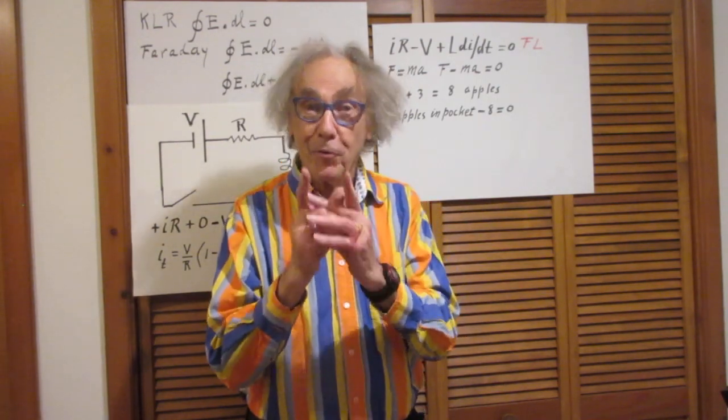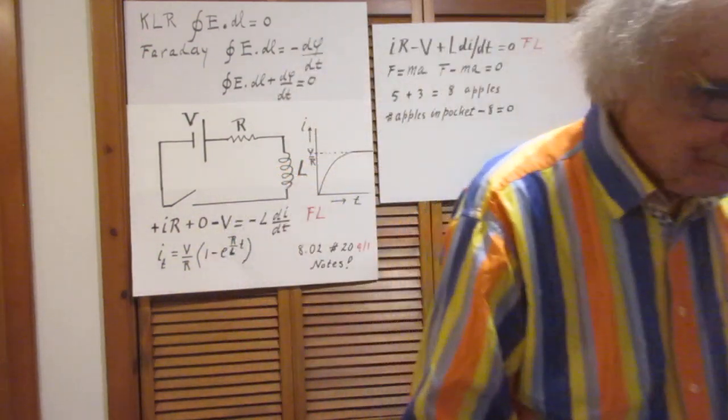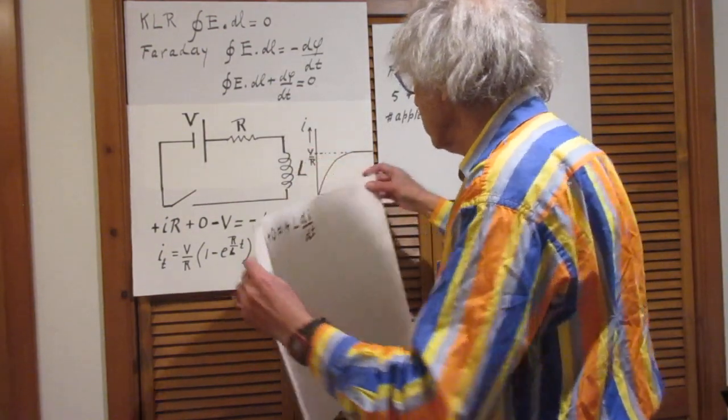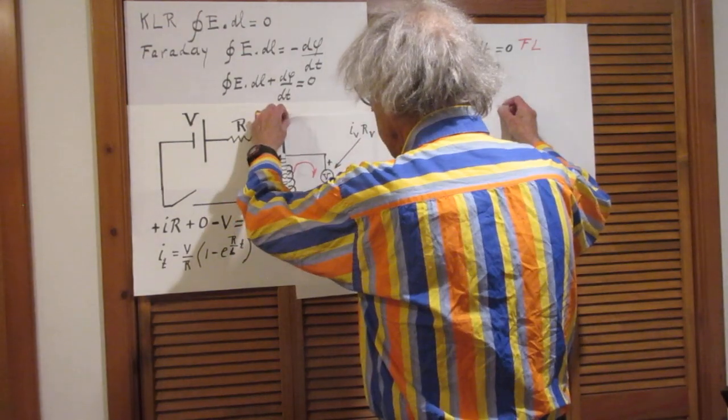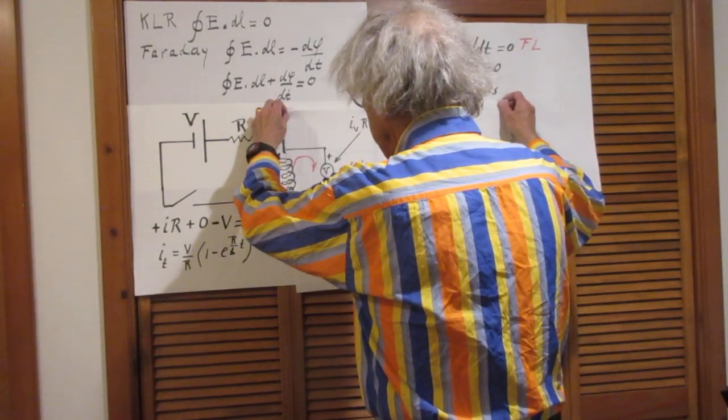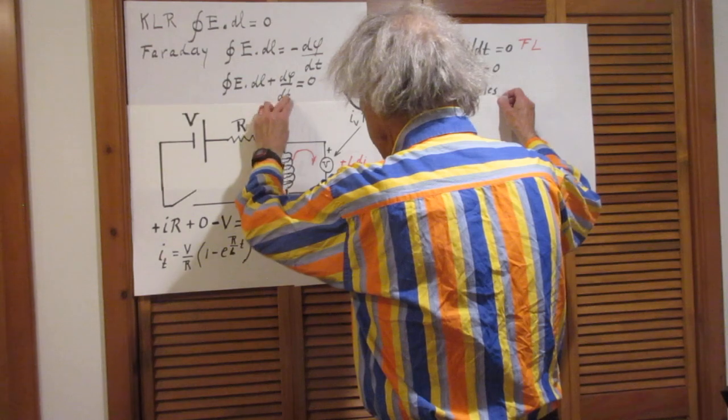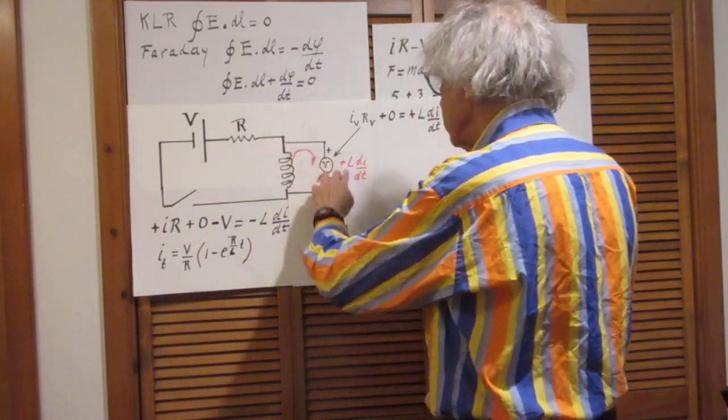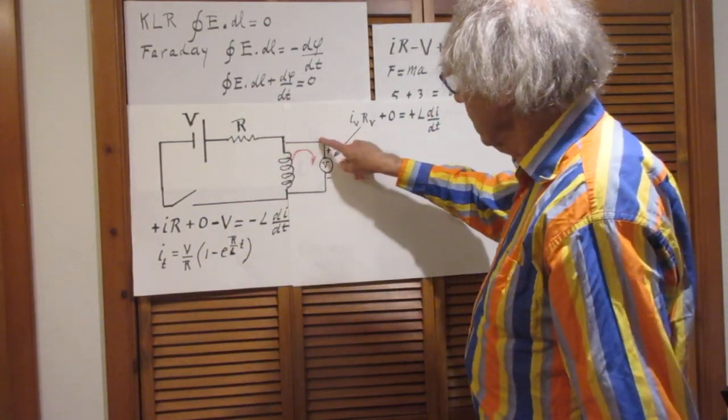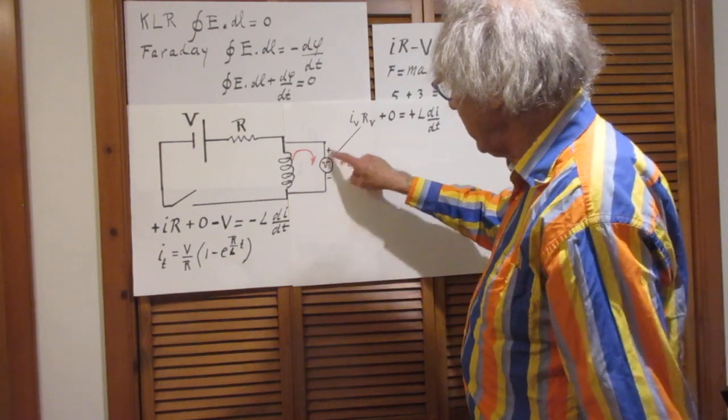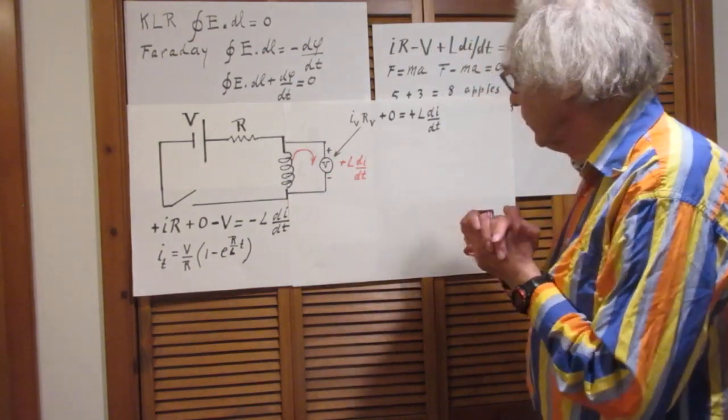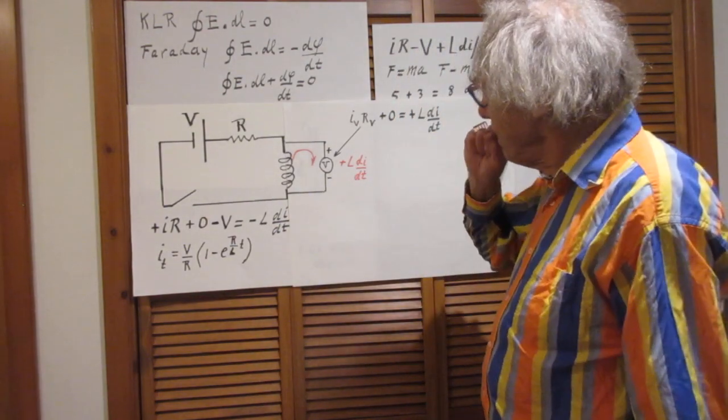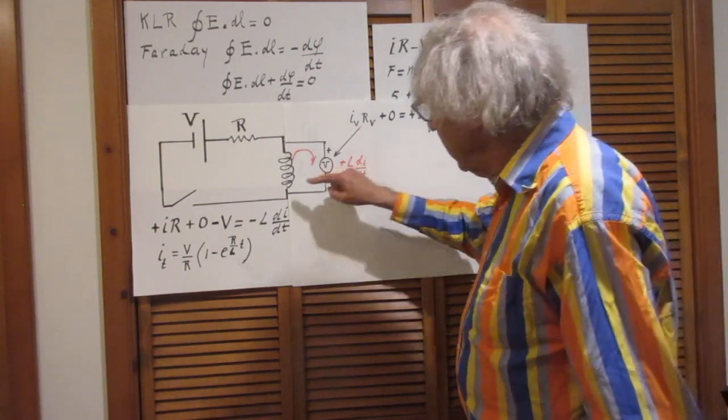Now get ready for the following, which is kind of cute. I'm going to put over this self-inductor, I'm going to put over it a voltmeter. That is, these are the wires, these are the wires, this is the plus side of voltmeter, this is the minus side of voltmeter.